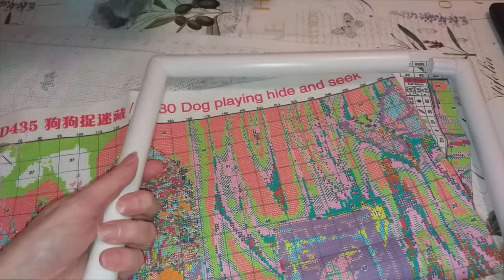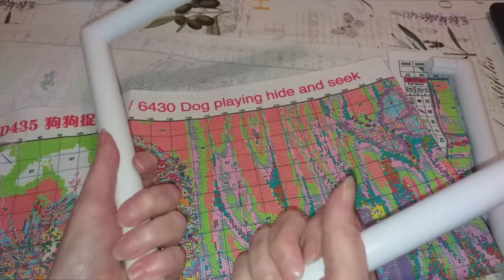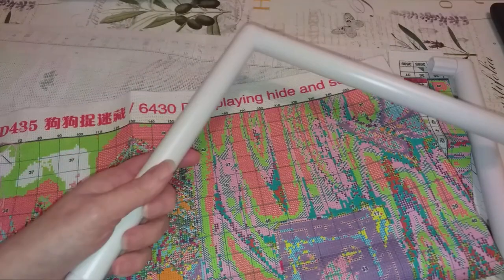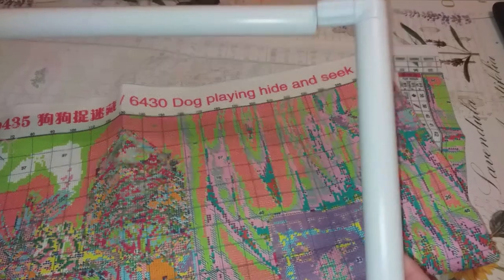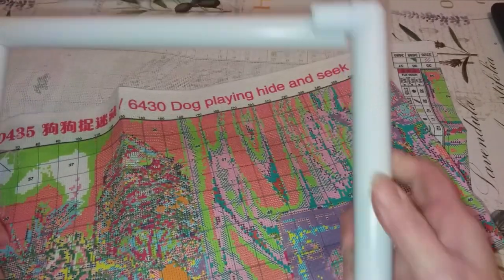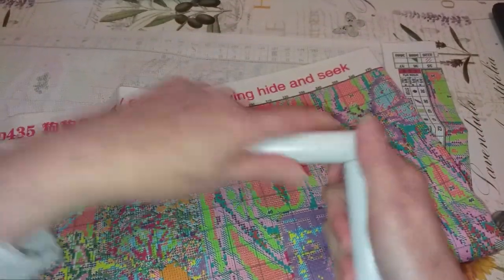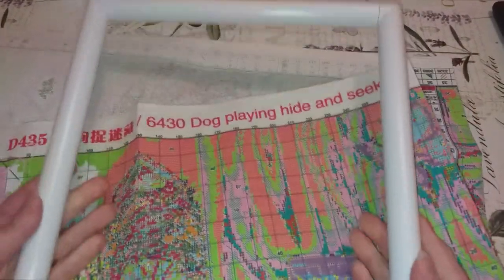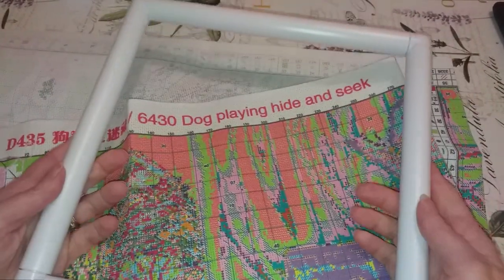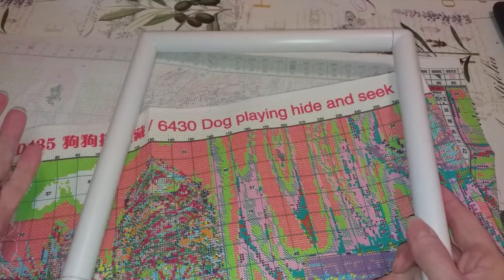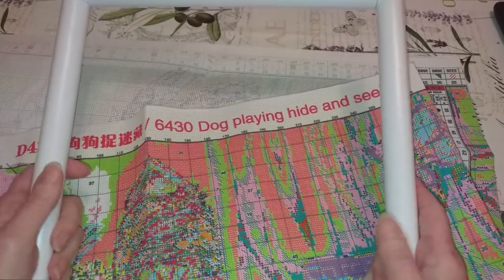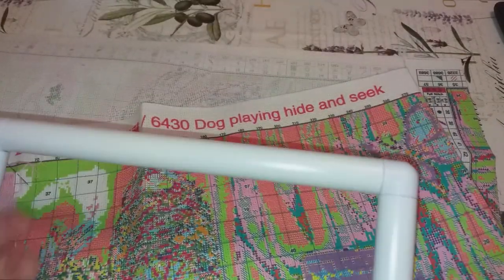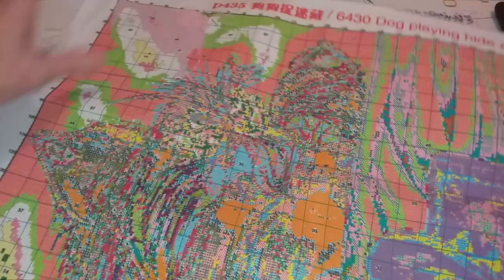Celui-là, c'est un 27 sur 27, 27,5 je crois. Voilà, donc on a notre carré. Il y en existe des plus grands. Comme je vous avais dit, celui que j'avais eu, c'était un 42 je crois, c'était beaucoup trop grand. En tout cas, pour moi.